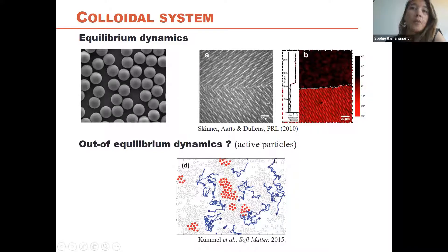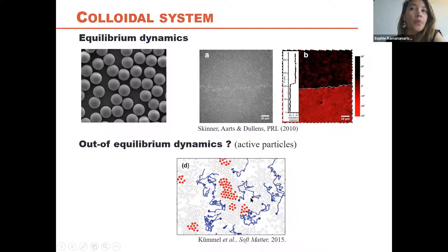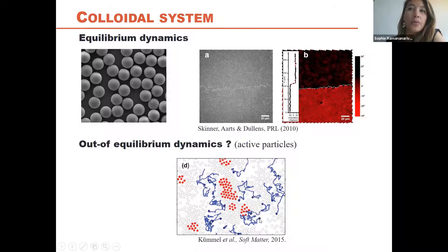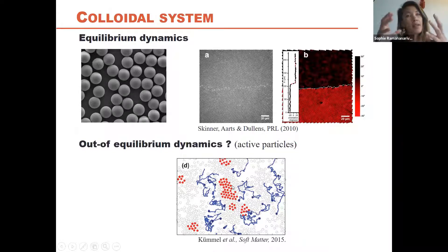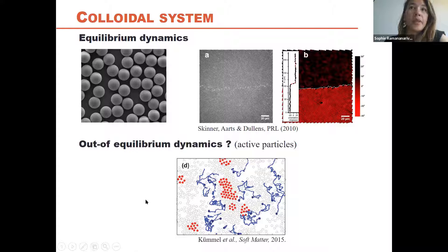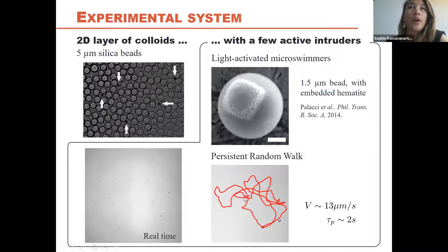With the advent of active particles that can move within the system, it opens a whole new framework to reinterpret what's going on outside the regular equilibrium framework. One nice example shows active particles — the blue dots — driving particle aggregation instead of spreading evenly as in a thermal system. This is the kind of behavior we examine when driving the system out of equilibrium by putting active particles in there.